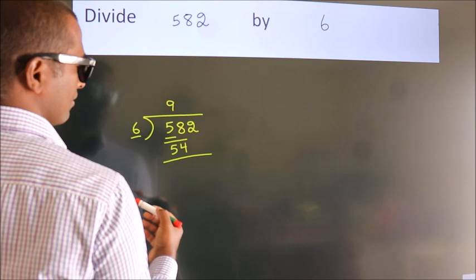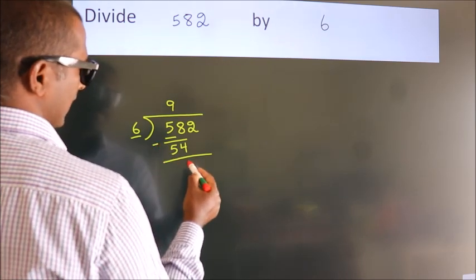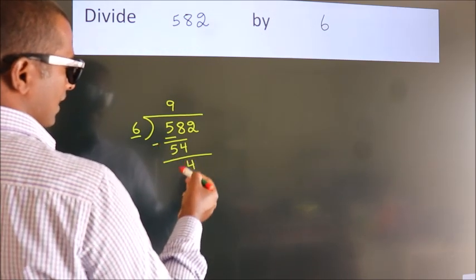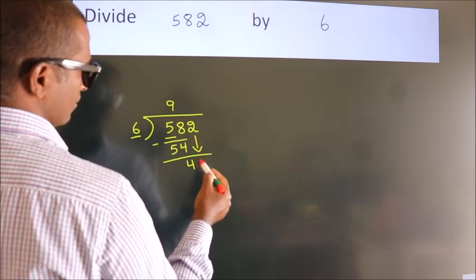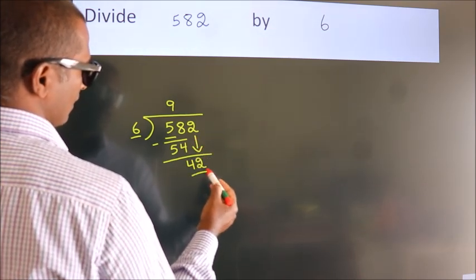Now we should subtract, we get 4. After this, bring down the next number. So 2 down, so 42.